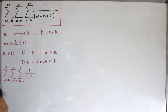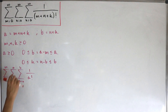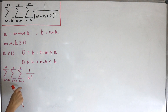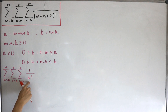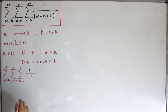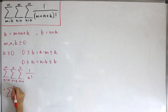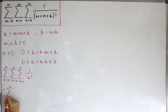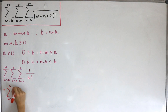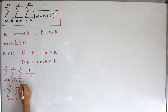Now let's focus on the double sum. We'll factor the 1/a! outside and look at the double sum where b goes from zero to a and k goes from zero to b of simply just one.